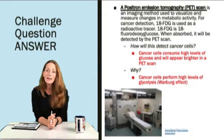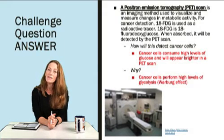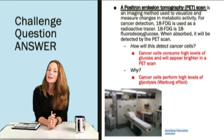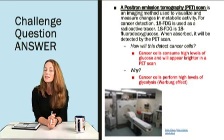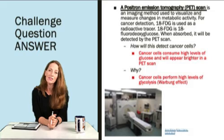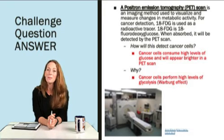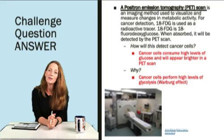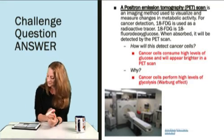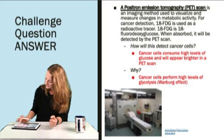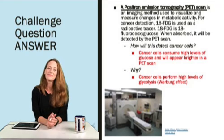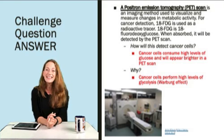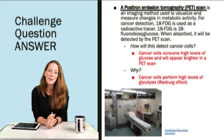Remember that cancer cells often have this Warburg effect — high glucose use — because of their excess glycolysis, even in oxygenated environments. We can take advantage of that using a PET scan to detect those metabolically active tumor cells. Let me know if you have any questions.